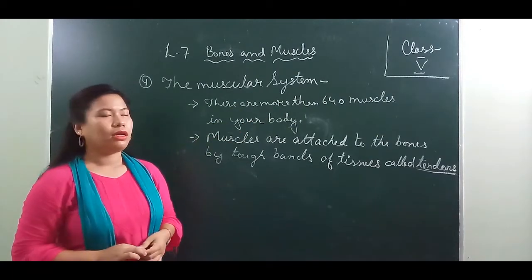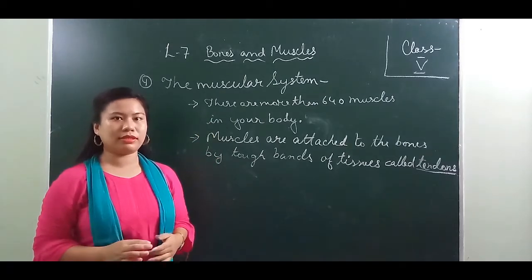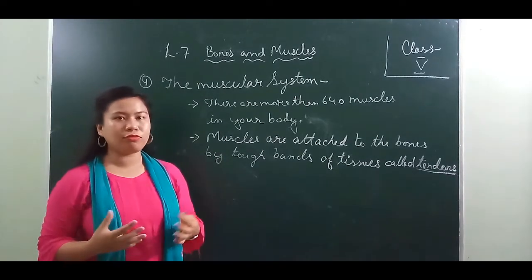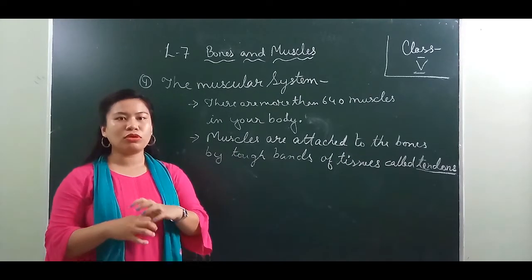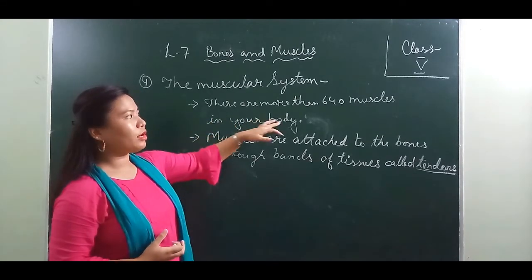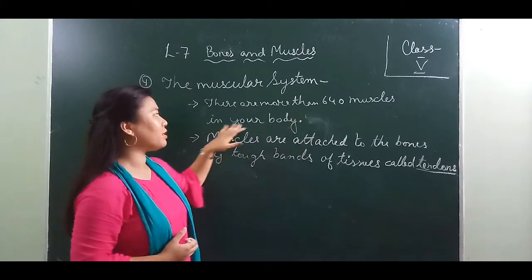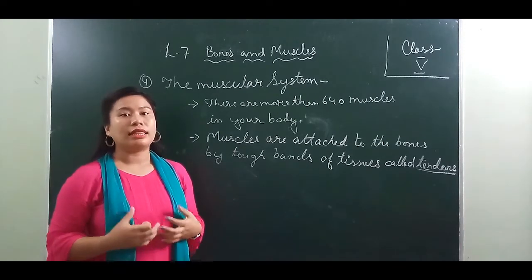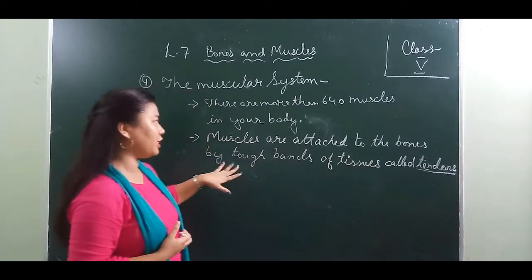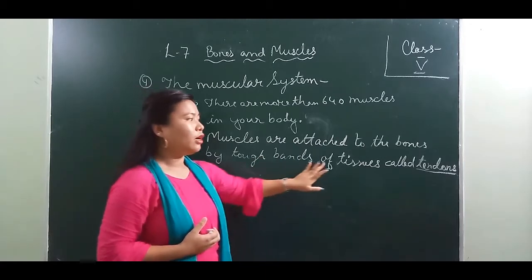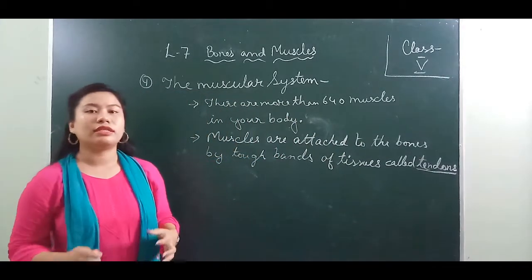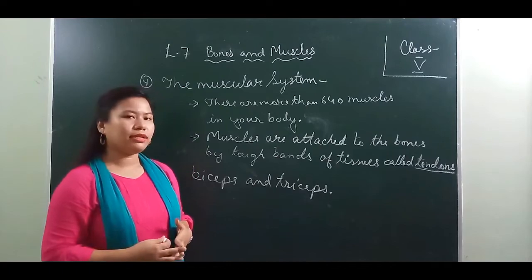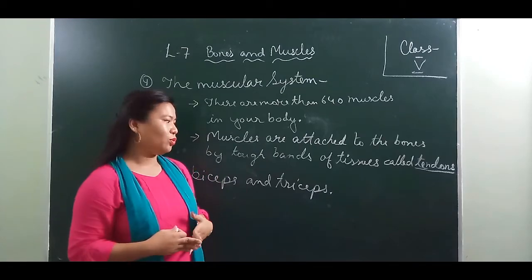Our next topic is the muscular system. The main organs of the muscular system are the muscles. Bones cannot move by themselves — muscles are attached to the bones and pull the bones to make them move. There are more than 640 muscles in your body, and together they make up about 40% of your body weight.